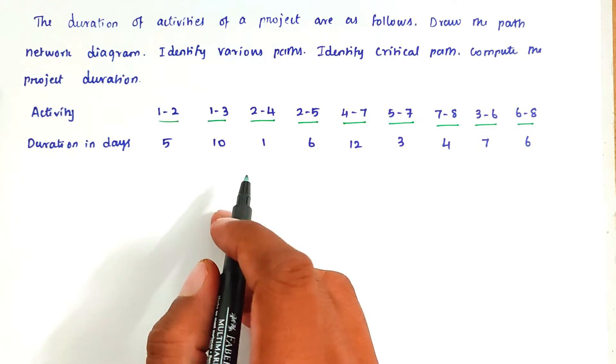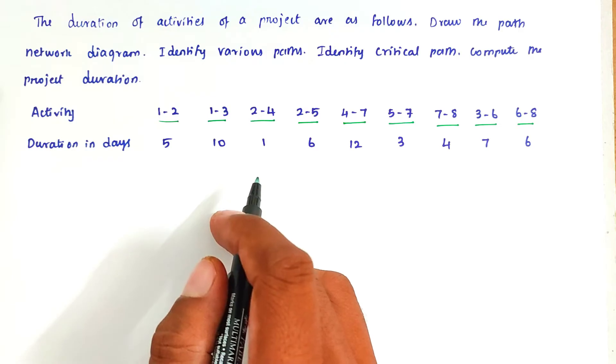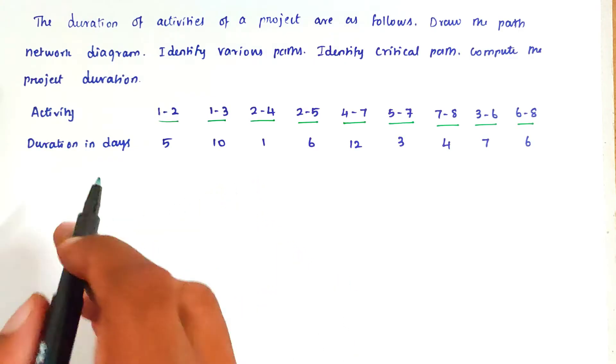The path containing the maximum duration is called the critical path, and the corresponding duration is called the critical duration.